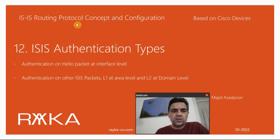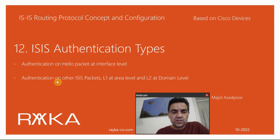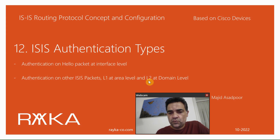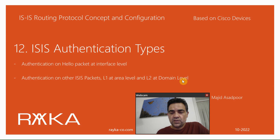Welcome to another video on ISIS routing protocol concepts and configuration. In this section I will talk about ISIS authentication types, which is somehow different from other routing protocols. In ISIS we have three types of authentication: authentication on hello packets at the interface level, and authentication on other ISIS packets like LSP, which can be configured at level one or level two. When configured at level one, the scope is area level, meaning all routers in the same area must have the same password. When configured at level two, the scope is domain level, meaning all routers in the ISIS domain must have the same password.